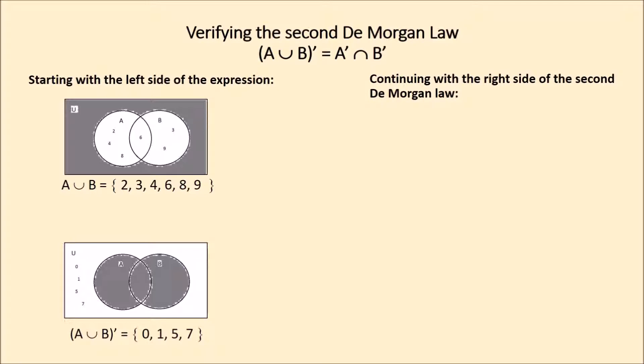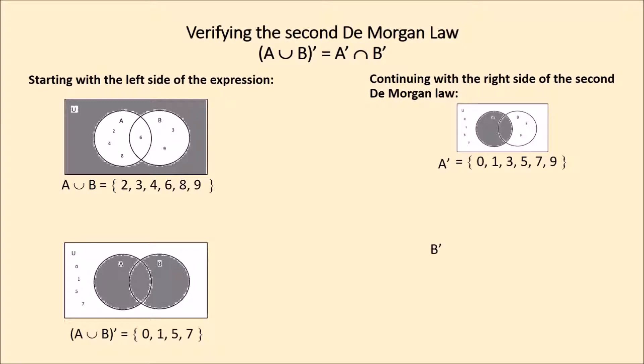Continuing with the right side of the second De Morgan law. Complement of subset A: the Venn diagram shows the numbers that are not in subset A. The numbers that can be read are 0, 1, 3, 5, 7, 9. Complement of subset B: the Venn diagram shows the numbers that are not in subset B. The numbers that can be read are 0, 1, 2, 4, 5, 7, 8.